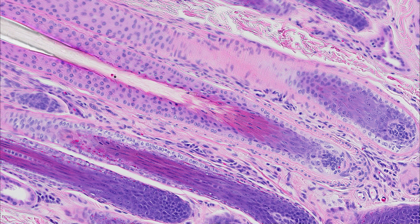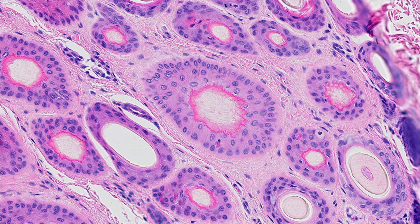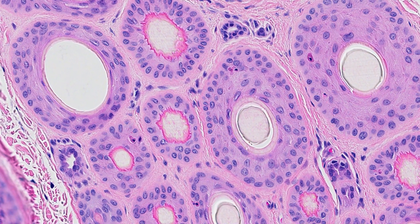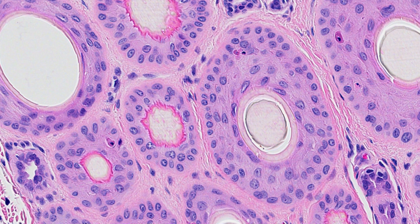In terms of histology, you can identify hair follicles in catagen and telogen phase because the hair shaft is held in place by keratin produced by the inner root sheath. Since the hair is no longer anchored by the hair bulb, this keratin maintains the hair within the follicle. It blurs the distinction between the shaft and follicular epithelium, giving it a wrinkled appearance.